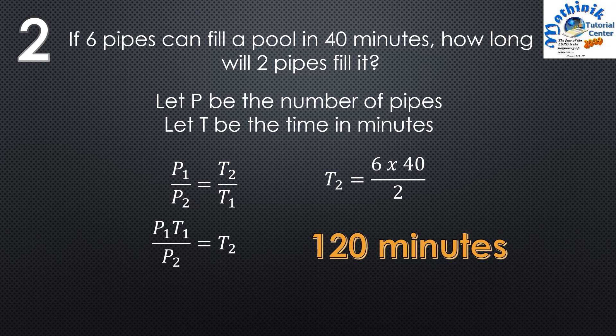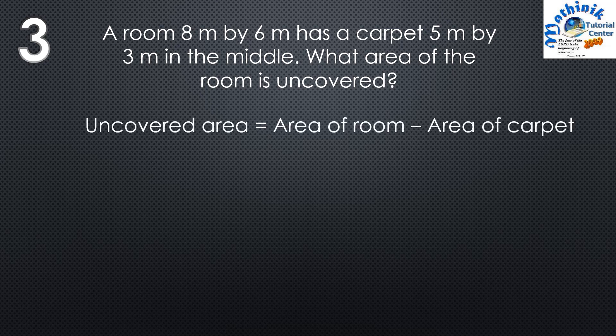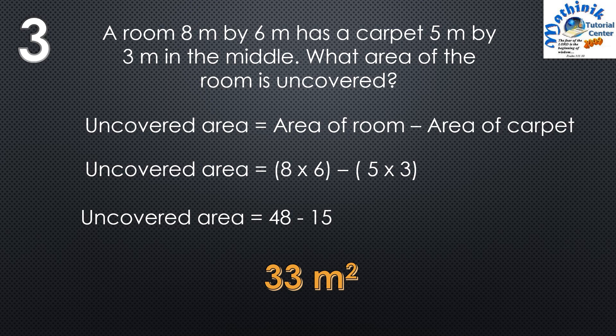Question number 3: A room 8 meters by 6 meters has a carpet 5 meters by 3 meters in the middle. What area of the room is uncovered? We get the difference between the area of the room and the area covered by the carpet: 8 times 6 minus 5 times 3. The uncovered area is 48 minus 15, that is 33 square meters.